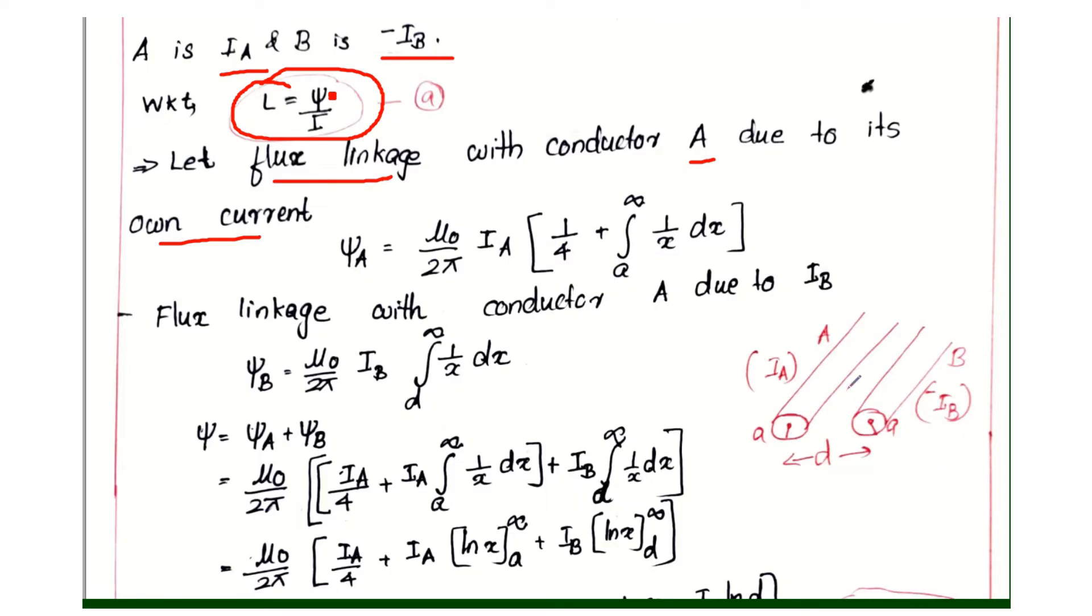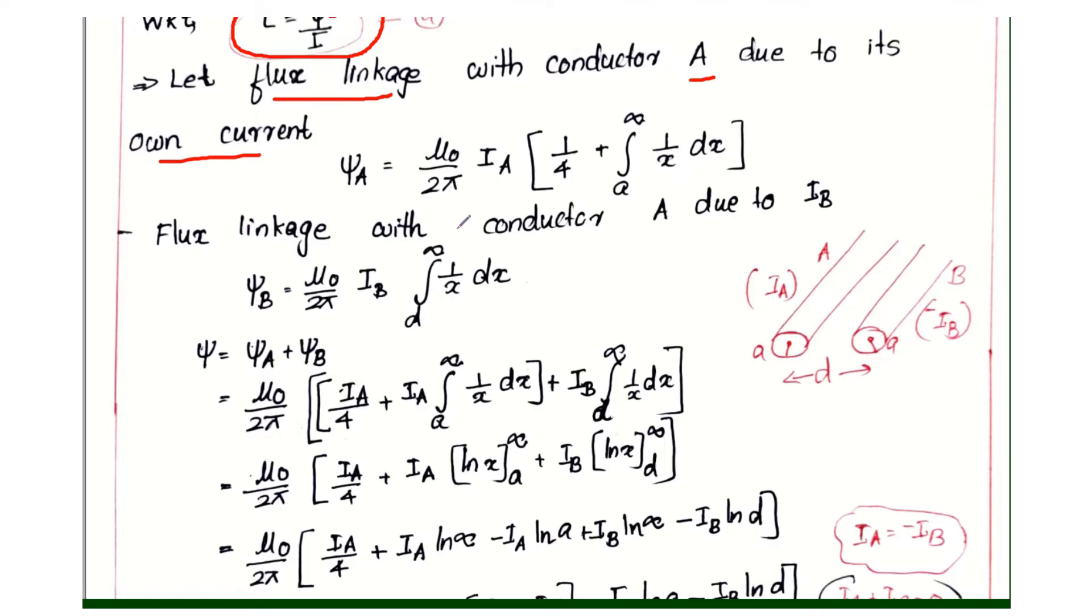This equation is 1 by x dx. Similarly, flux linkage with conductor A due to IB. ψB is equal to μ₀ divided by 2π IB into integral D to infinity, 1 by x dx.